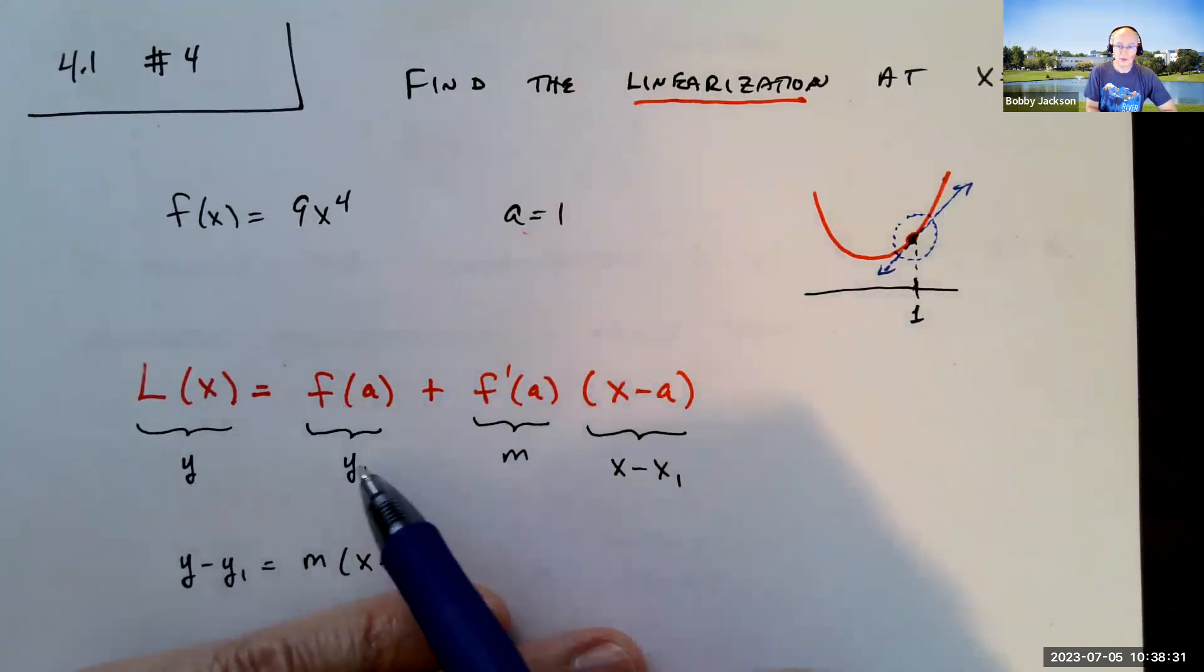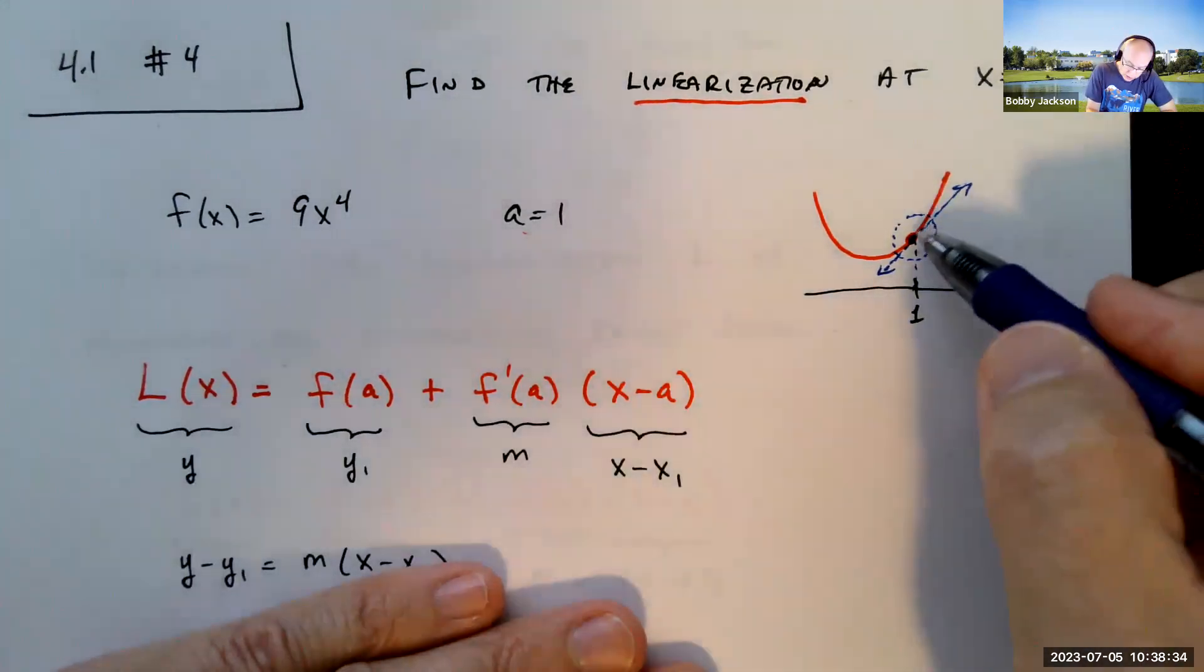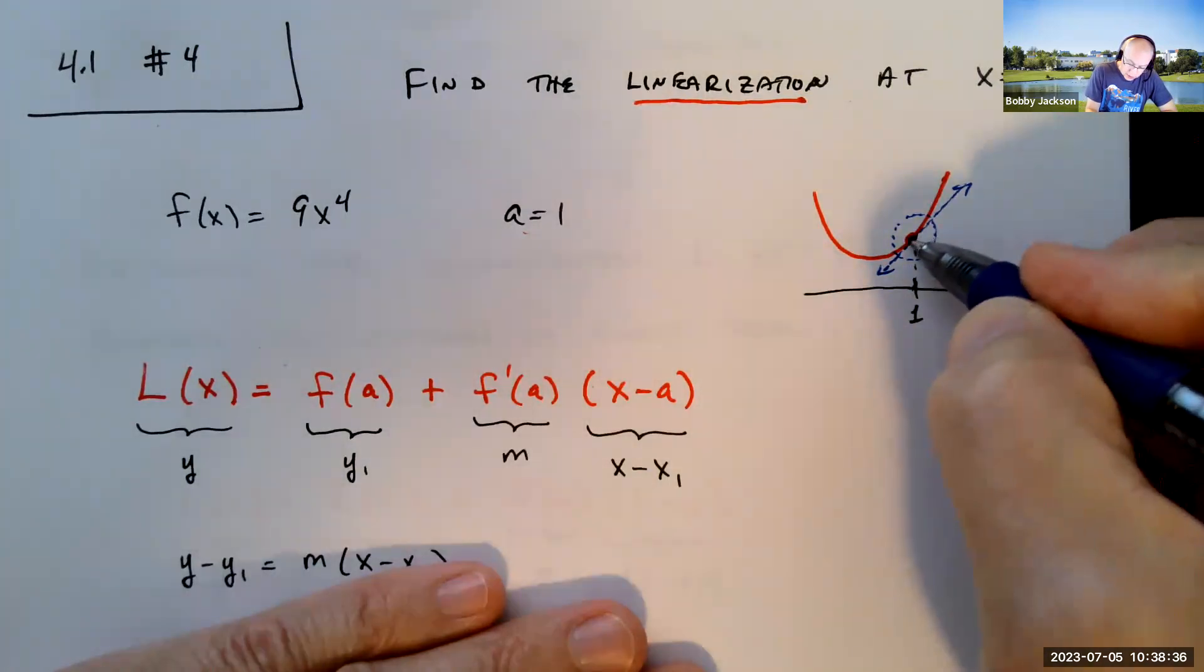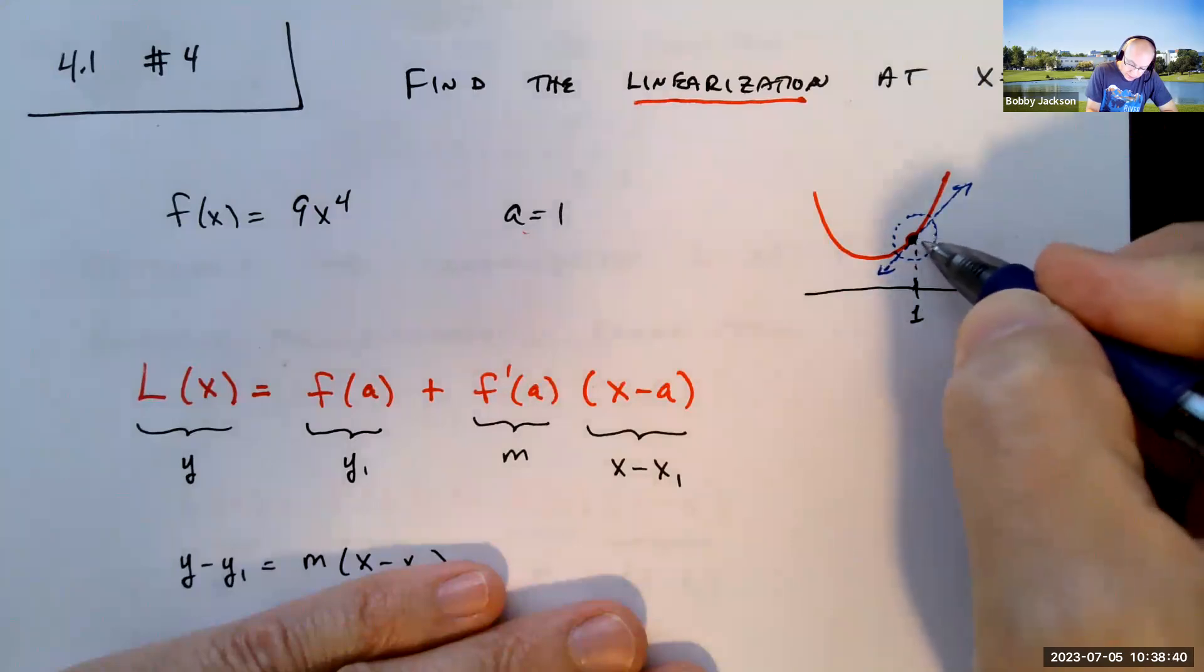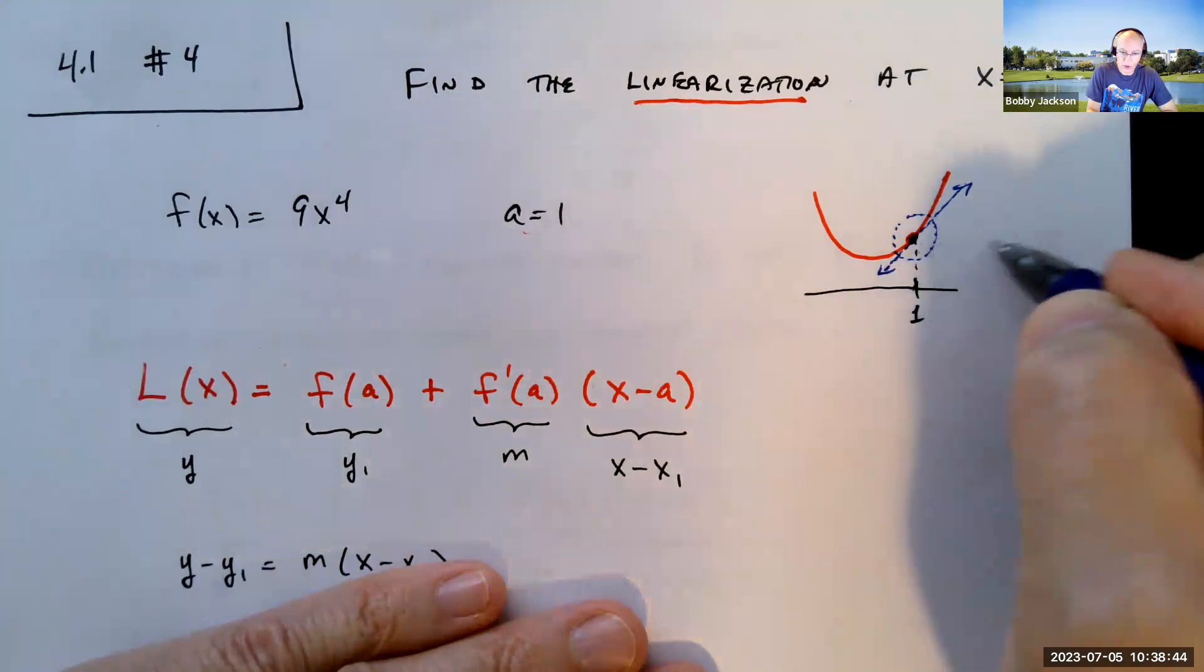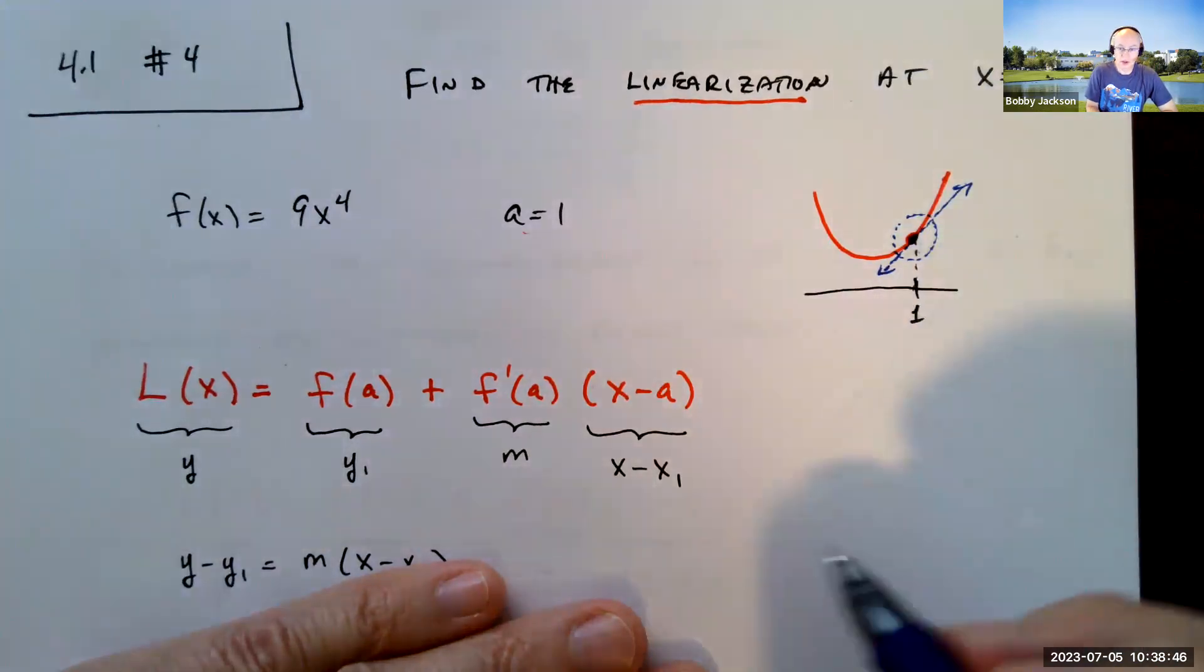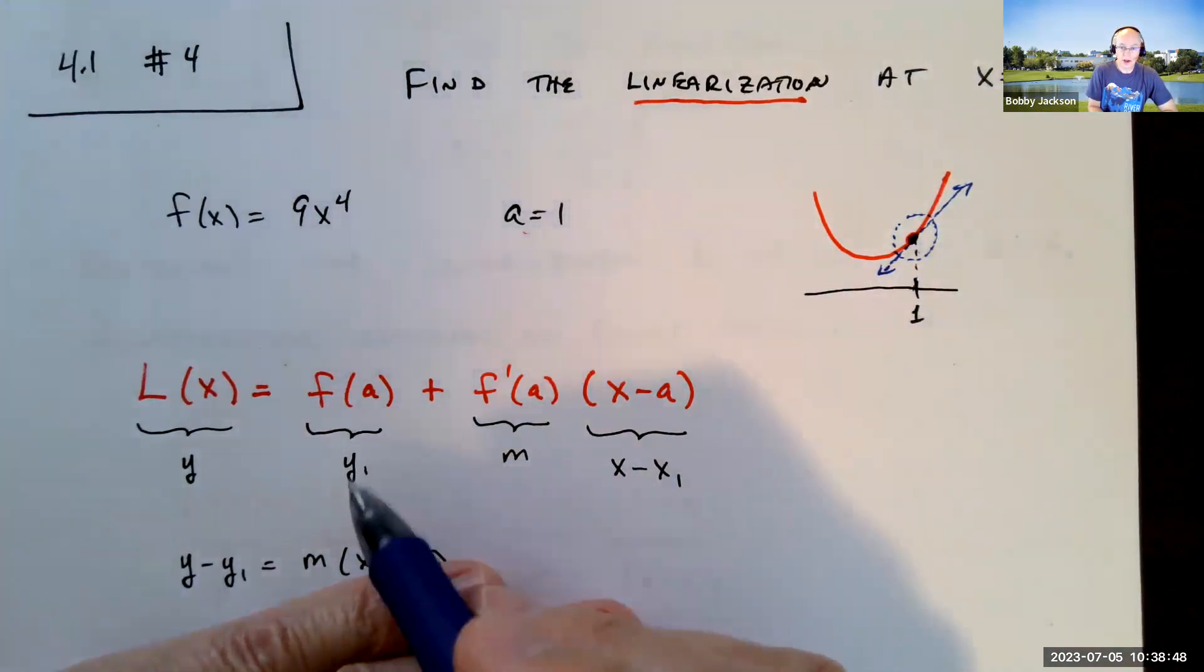The f of a would be what we typically call the point here. The point is, a is 1. A comma f of a is that point, or the point we usually call x1 comma y1 when we're talking about the equation of a line. So that's the y1 or f of a.